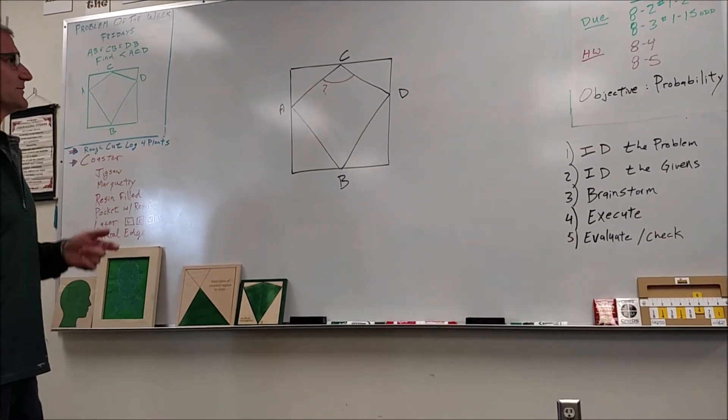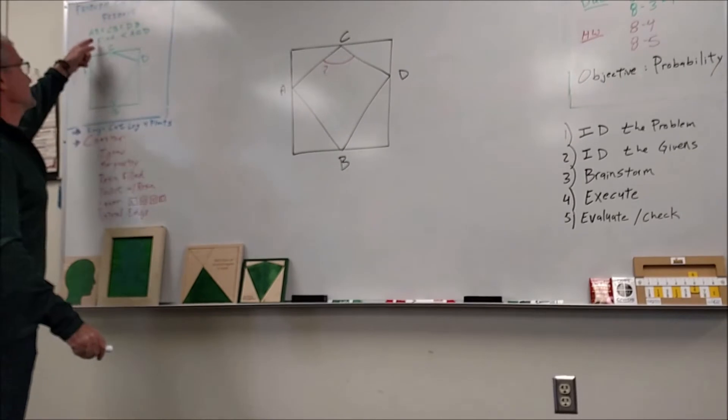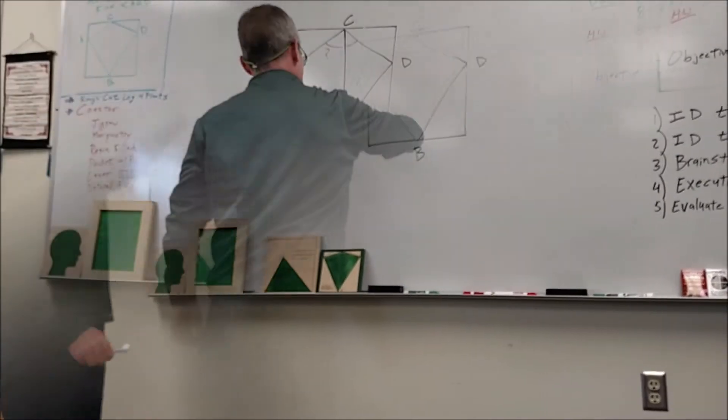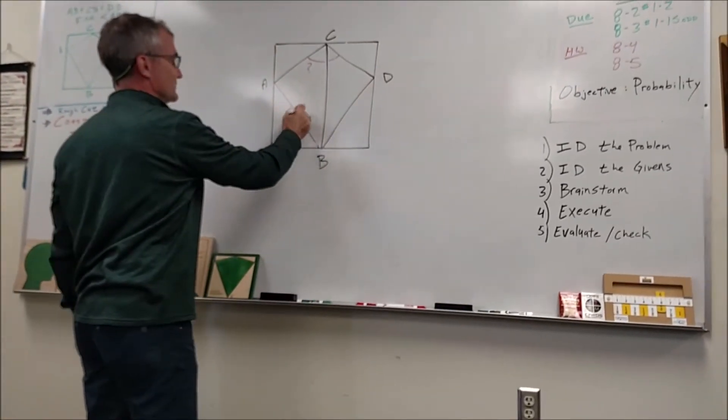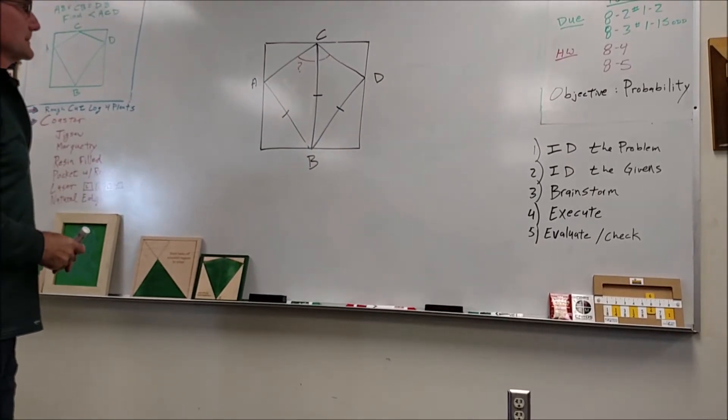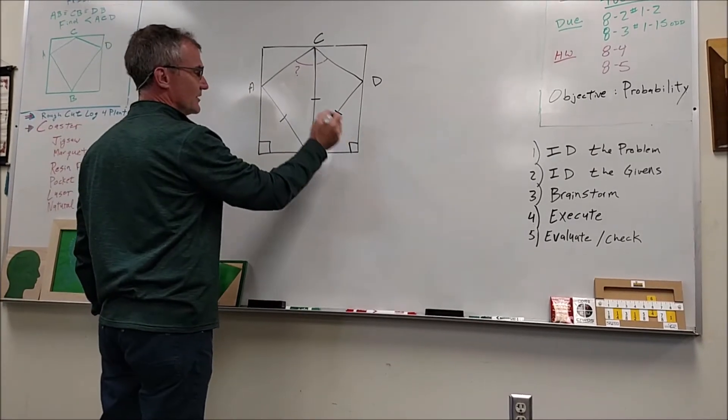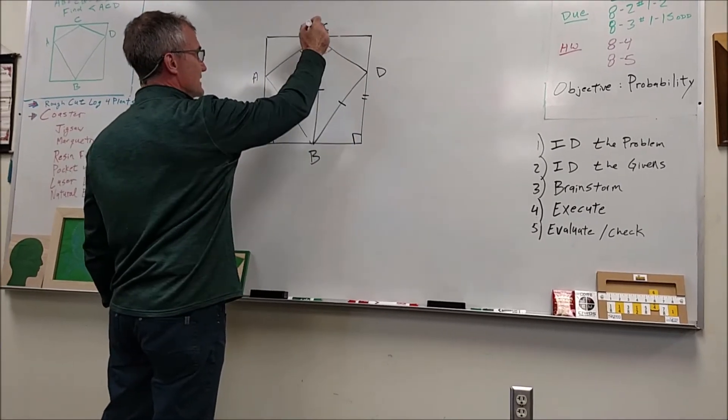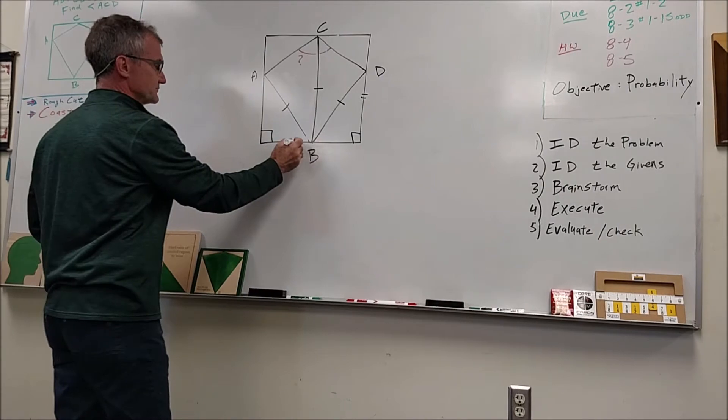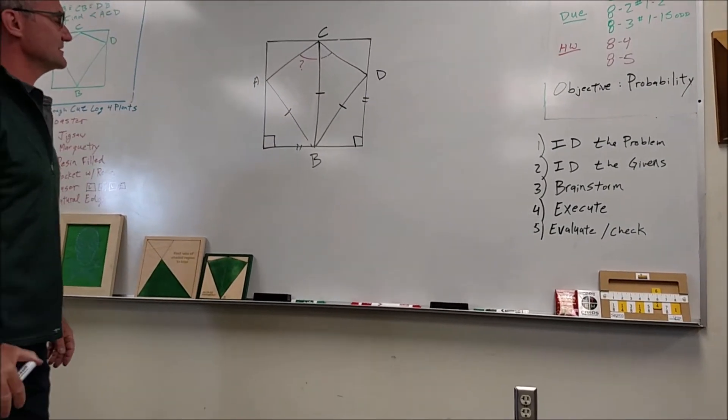Step two, identify all of the givens. So the givens are AB is congruent to CB, congruent to DB. All three of these are congruent. I'm going to mark that right in my diagram. I know it's a square, so since it's a square, I'm going to mark that they're all right angles. All these sides are congruent. So step one, identify the problem, and then identify the givens.